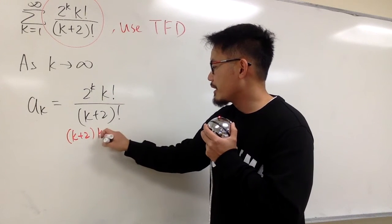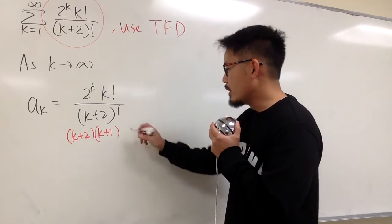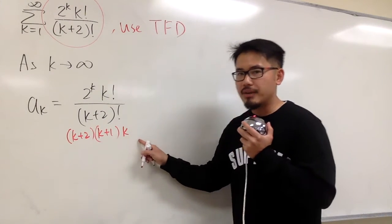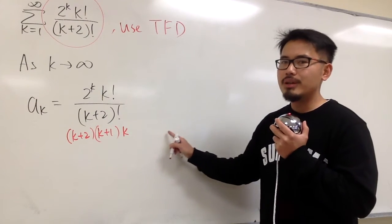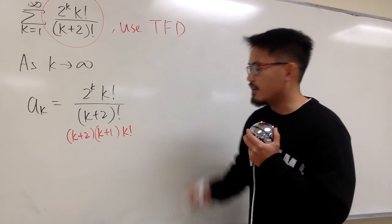And then, the next one, once again, it's going to be one less, which is just going to be k. And then, we will have k minus 1, k minus 2, so on, so on. All this together will be just k factorial.